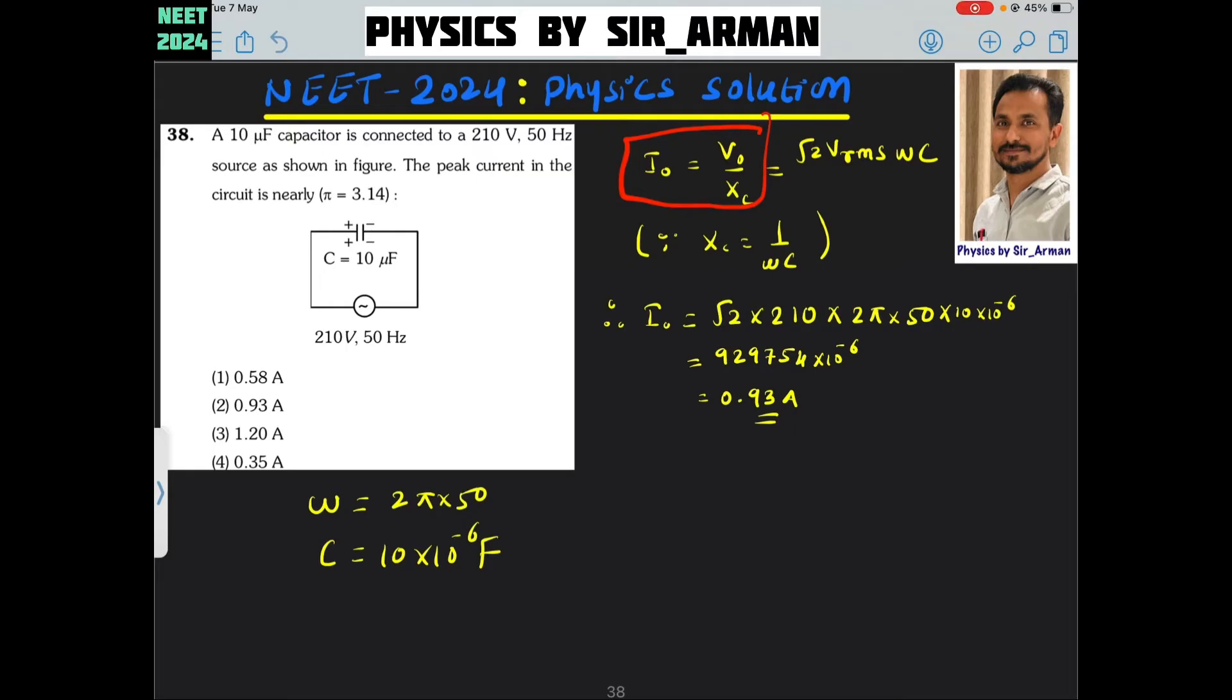Now, this V0 is nothing but root 2 times Vrms. So I have written here root 2 Vrms, and XC is 1 upon omega C.